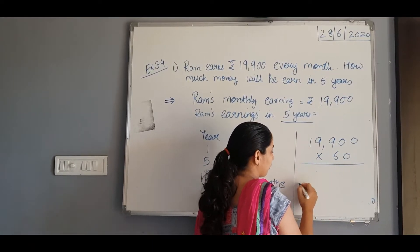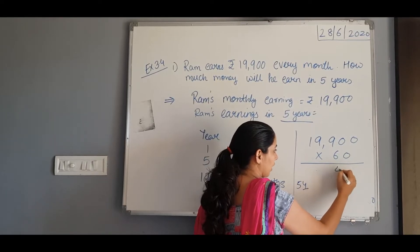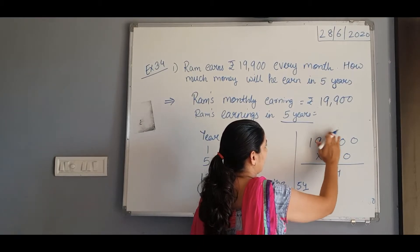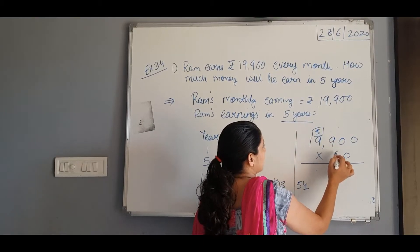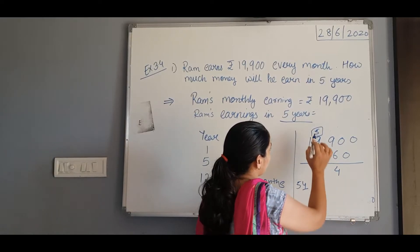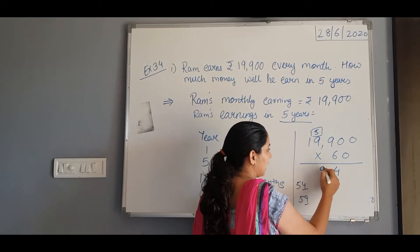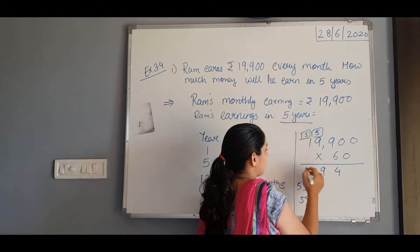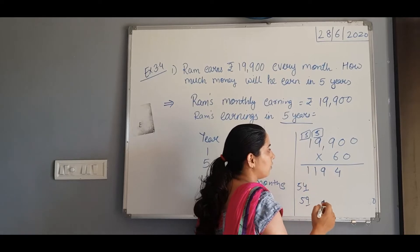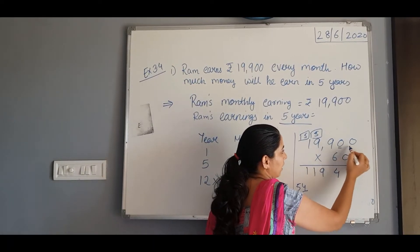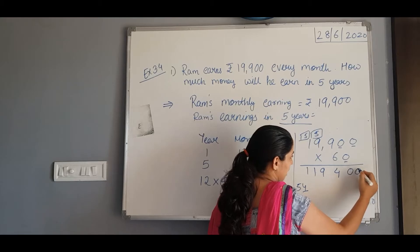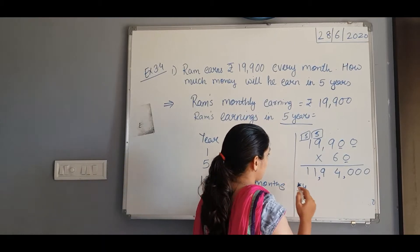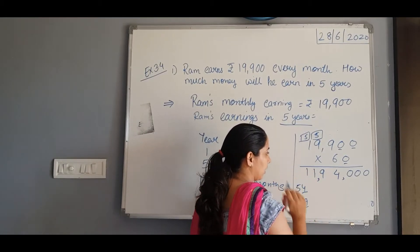6 nines are 54 — so 4 here and 5 will be carried forward to the next place. Again 6 nines are 54, plus 5 is 59 — 9 here and 5 will be carried forward. 6 ones are 6, plus 5 is 11. Now we will put 3 zeros at the end of the product. So we got the answer: Ram's earning for 5 years is rupees 11,94,000.